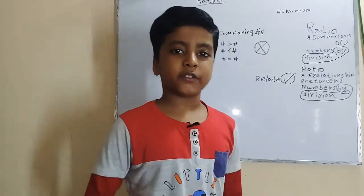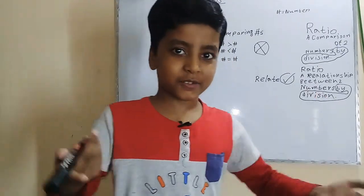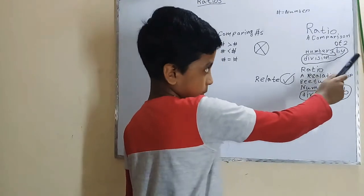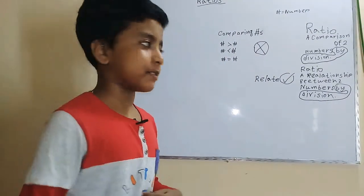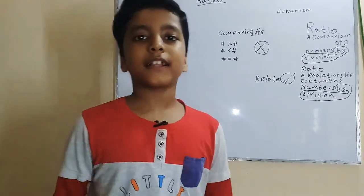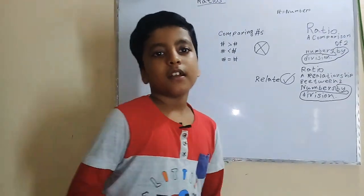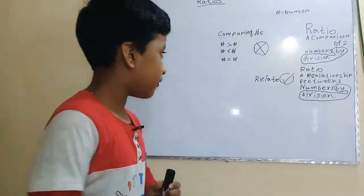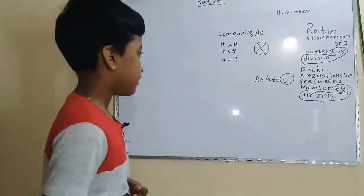Hello viewers, welcome to my YouTube channel. In this video I'm going to talk about ratios. What is a ratio? A ratio is a comparison between two numbers by division. Most of us think that comparing numbers is just deciding if a number is greater than, less than, or equal to another number, but with a ratio we're seeing how two numbers relate to each other. We like to think of a ratio as a relationship between two numbers by division.